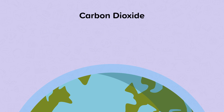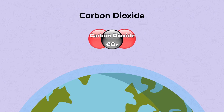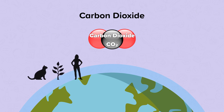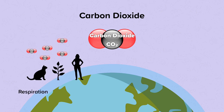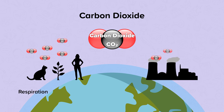Carbon dioxide is a compound made up of one carbon atom and two oxygen atoms. It is produced naturally when plants and animals respire. It is also produced as a waste product of the combustion of fossil fuels in power stations.